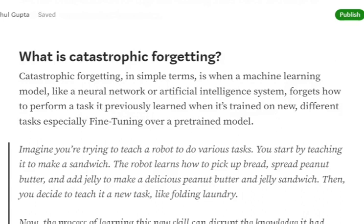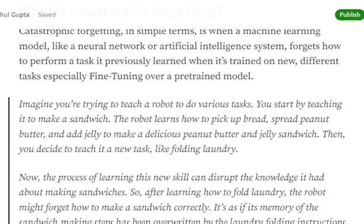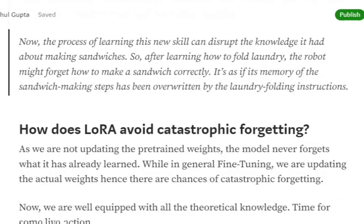Basically, catastrophic forgetting is when we are training our pre-trained model on some new task, it might forget how to operate on the previous task. For example, giving a layman's example: you teach your robot to do household tasks — you start by teaching it how to make a sandwich, it learns all the steps. Now the second task you pick up is folding laundry, and while learning to fold laundry, it starts forgetting how to make a sandwich.